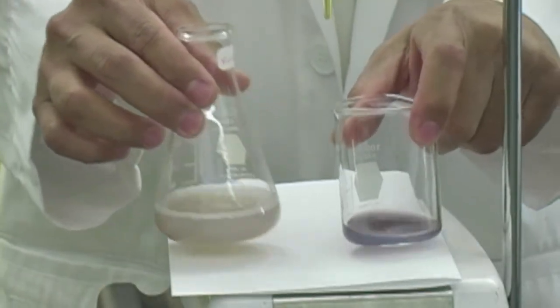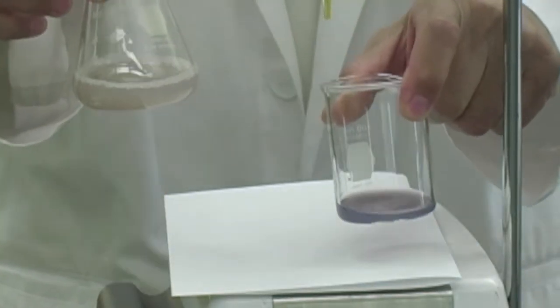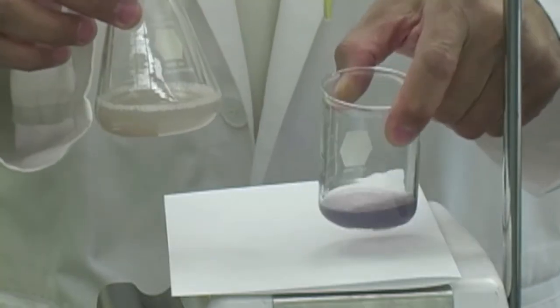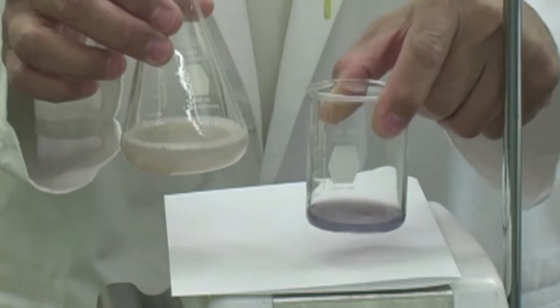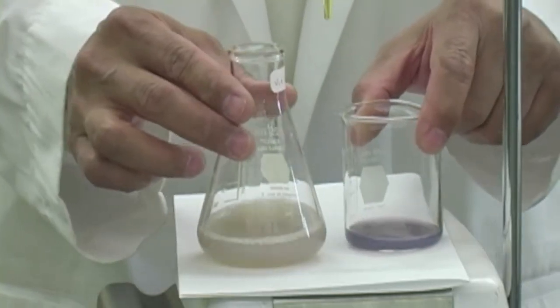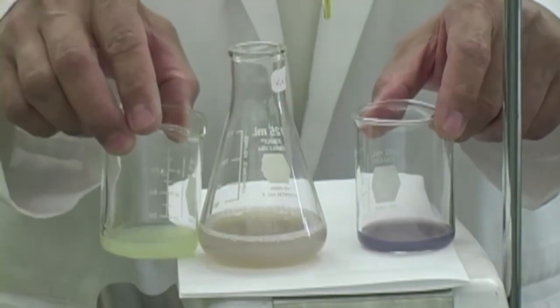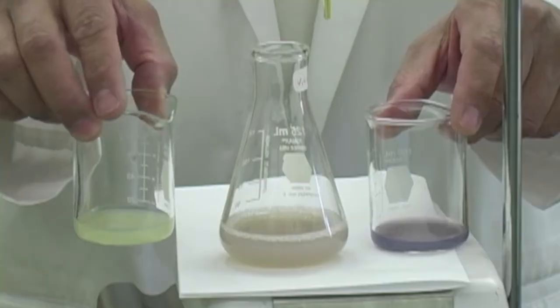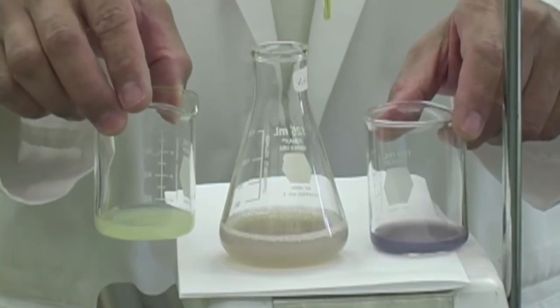This is the pre-titration to see what the endpoint looks like. You can see it's certainly darker than this right here. This would be the color of the lemon juice originally.